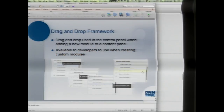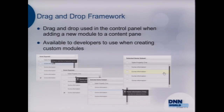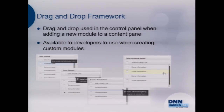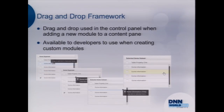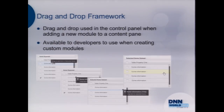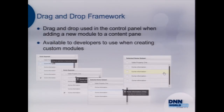One of the new things in DNN 7 is a drag-and-drop framework. There is drag and drop as part of the control panel, which we'll take a look at. What Ryan Martinez was excited about is that they not only created drag and drop for the control panel, but they made it exposed so folks could use it as a framework or control base. When you want to implement drag and drop, take a look at what they did in the control panel. He said they're going to be coming out with a guide and a blog about how to use it — for concepts like drag and dropping between two lists.